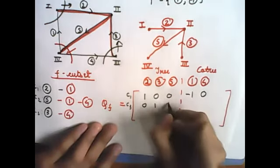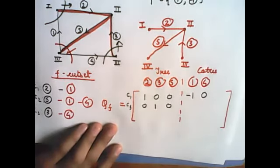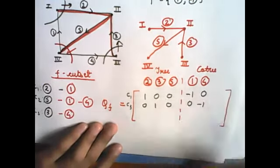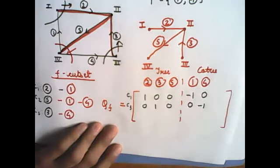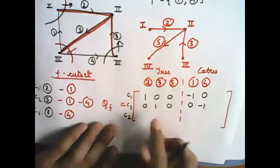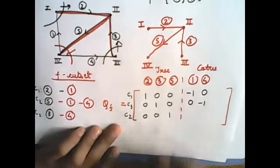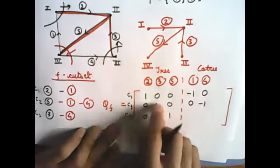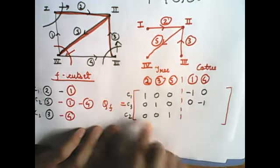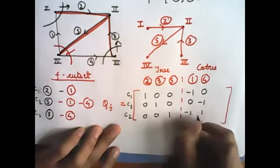1, 3 is present, 5 is not present, now 4 is present with a negative sign. Ab c2 likh deta hoon, yeh identity matrix sa banane ke liye maine aisa kiya. Now 2 is not present, 3 is not present, 5 is present, only one branch at a time and both 1 and 4 are present with negative sign.